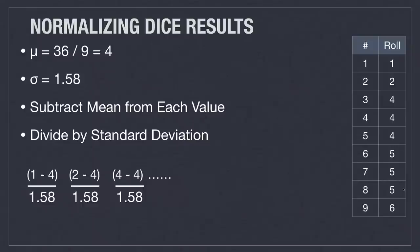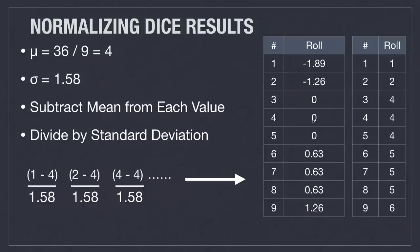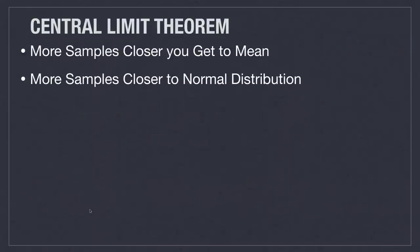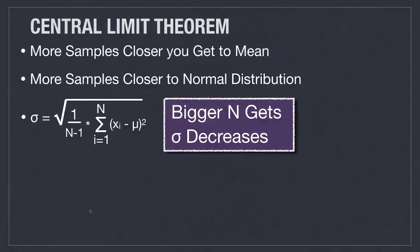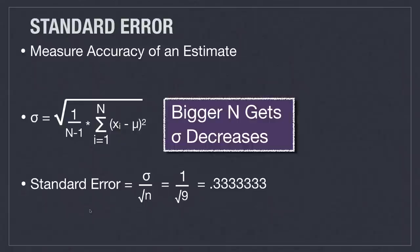A standard normal distribution has a mean of zero and a standard deviation of one. If we calculate the mean from our sample, we get a value of 4, and the standard deviation is 1.58. We can turn this into a standard normal distribution by simply subtracting the mean from each value and then dividing by the standard deviation, giving us a mean value now at zero. The central limit theorem states that the more samples you take, the closer you get to the mean, and the distribution will approximate the normal distribution. As sample size increases, the standard deviation decreases. The standard error measures the accuracy of an estimate — we divide the standard deviation by the square root of the sample size, and as sample size increases, the standard error decreases.